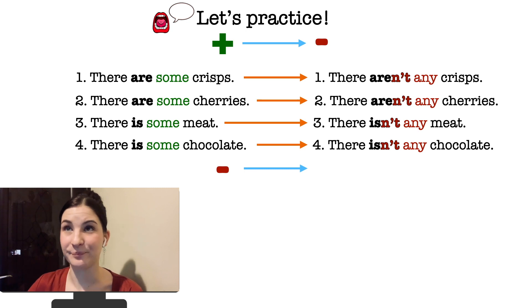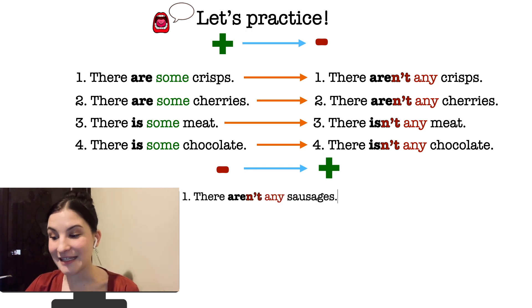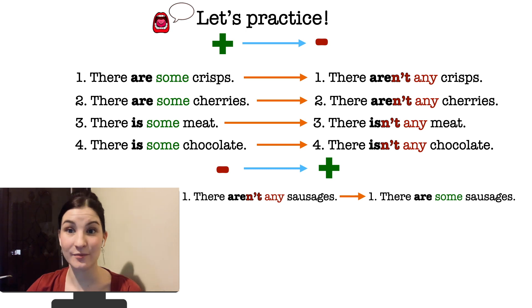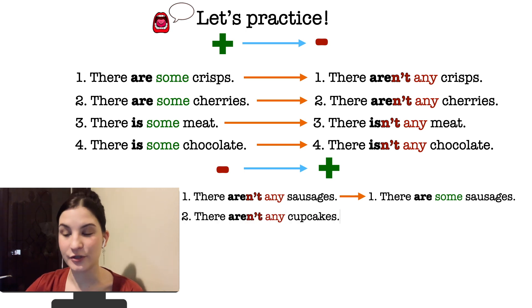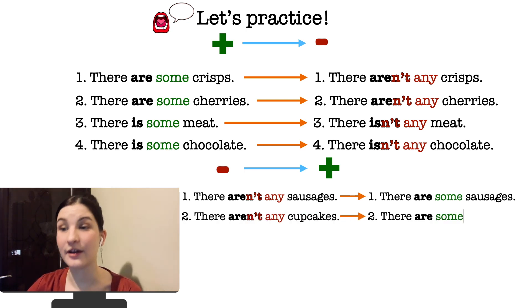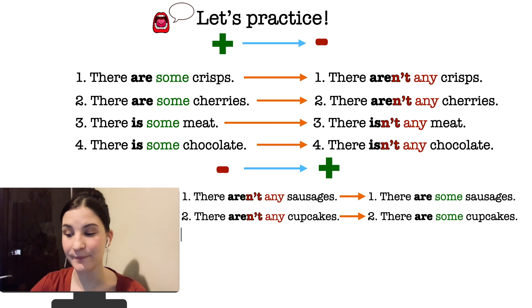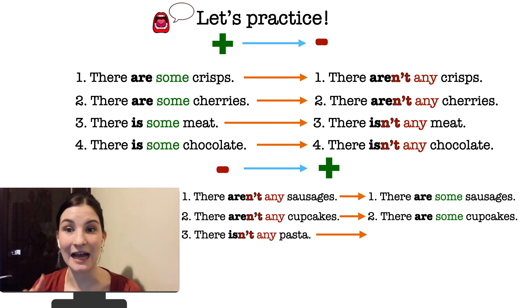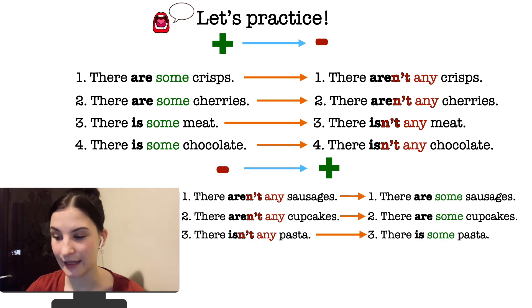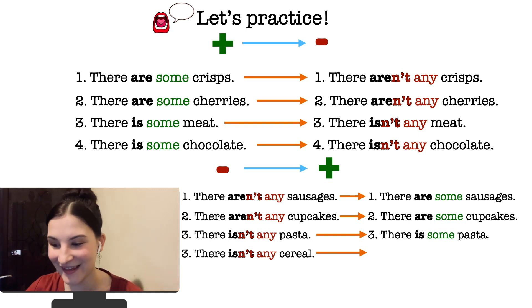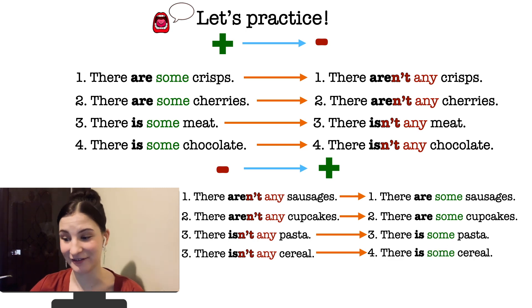Now let's do the opposite — change negative sentences into affirmative sentences. 'Any' changes to 'some', 'aren't' changes to 'are'. There aren't any sausages → There are some sausages. There aren't any cupcakes → There are some cupcakes. There isn't any pasta — pasta is uncountable, that's why we use 'isn't' — changes to 'There is some pasta'. There isn't any cereal → There is some cereal.